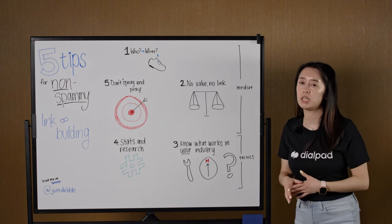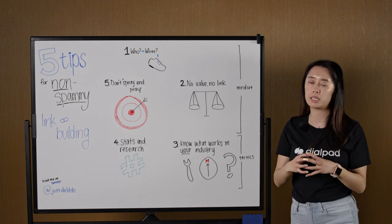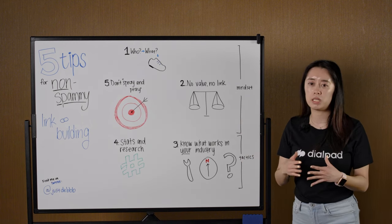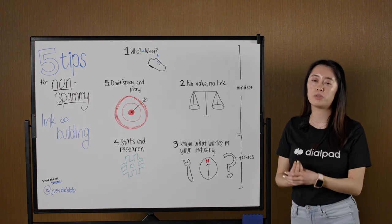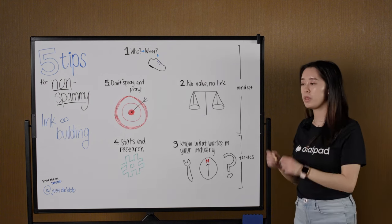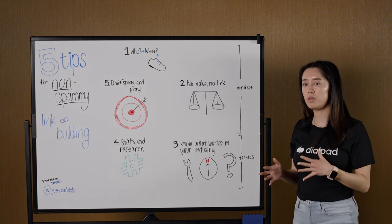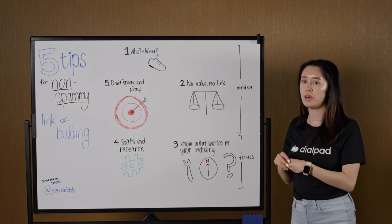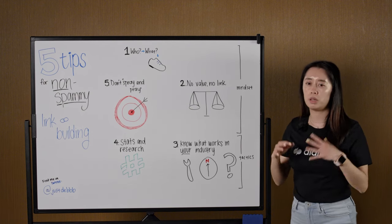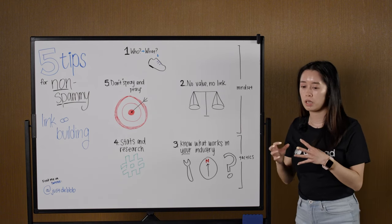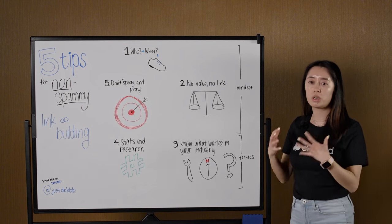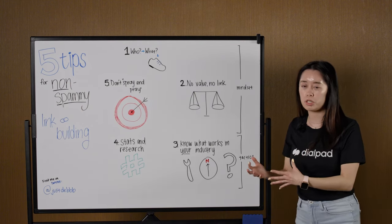Second tip, which is related to the first, is you have to make sure that your content — whatever linkable asset you're trying to create — has some sort of value. No value, no links. The way link building works fundamentally is your content needs to provide some sort of value in order to get a link. We often think about making content valuable to our customers or potential clients, but we don't always think about the broader audience. What content might be valuable to the industry as a whole, or informational and helpful for the content writers and journalists you want to link to you?